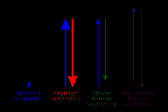Raman spectroscopy works on the basis of inelastic scattering of light. It occurs when a photon excites a sample molecule in a certain vibrational state to a higher virtual state. Then it comes down to a lower energy level which is at a slightly higher point than the initial energy level. This shift in the wave number is known as the Raman shift.